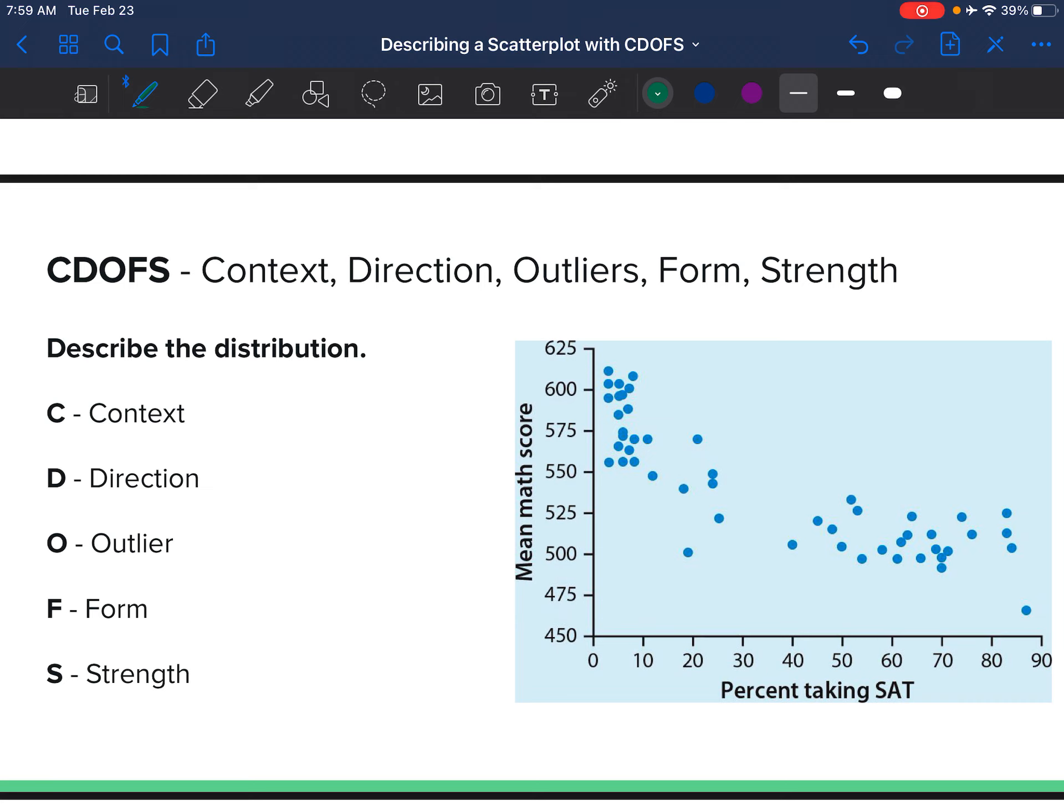When you want to describe a scatterplot, there are five things that you need to include in your description for it to be complete. They are the context, the direction, if there are outliers, the form, and the strength.